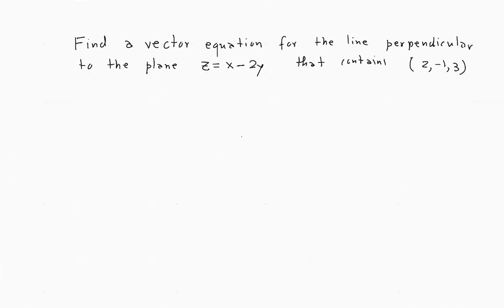Here we would like to find the vector equation for the line that does two things: first, it's perpendicular to the plane z equals x minus 2y, and secondly, it contains the point (2, -1, 3).